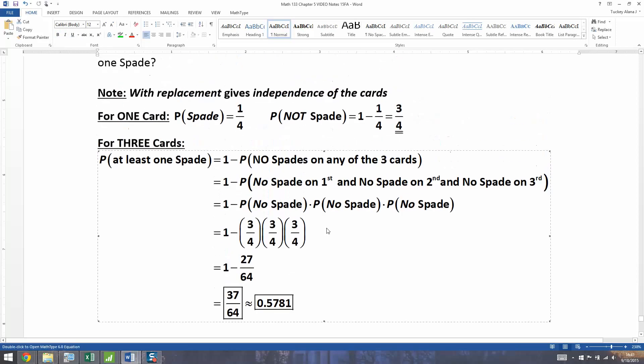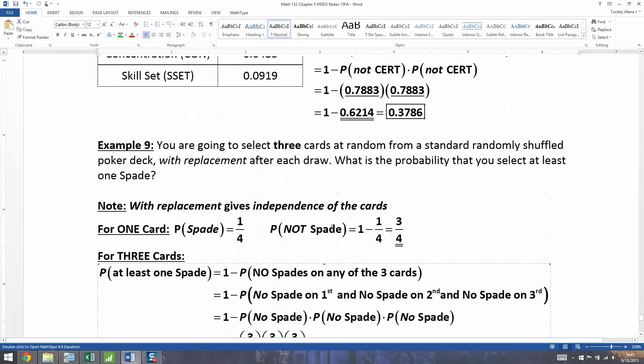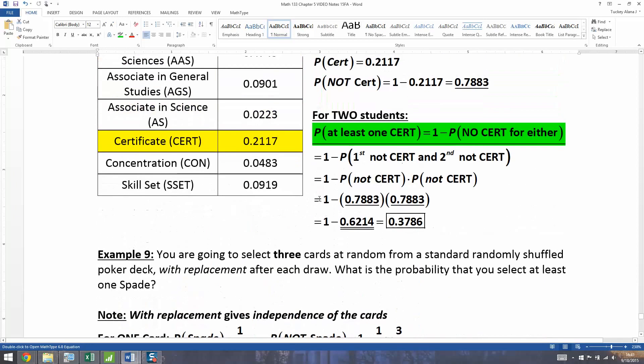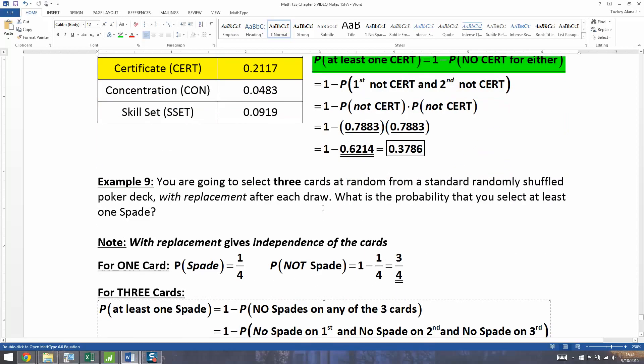All right, so we have seen the at least one rule applied to both classical probability for the spades and an empirical probability. And you realize you're going to have to be multiplying and then subtracting from one whenever you're dealing with two draws, two students, three kids, things like that.